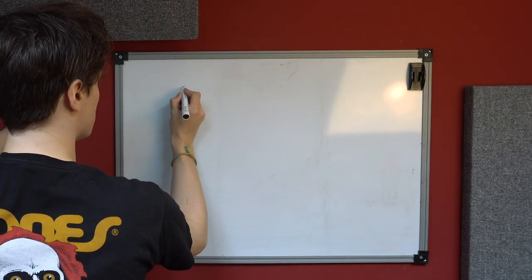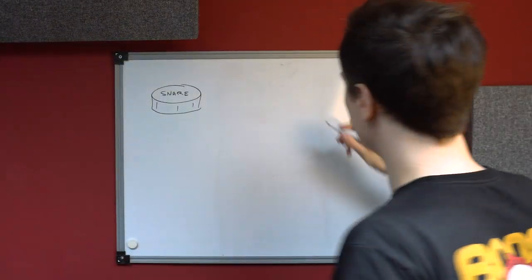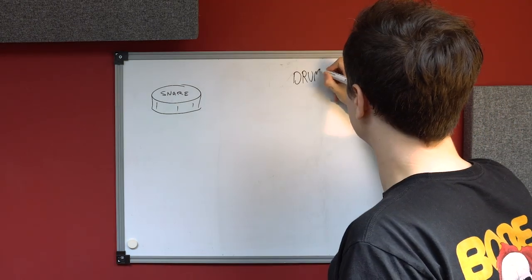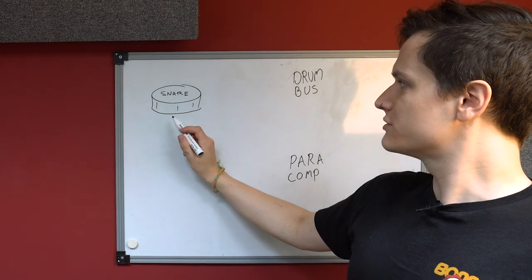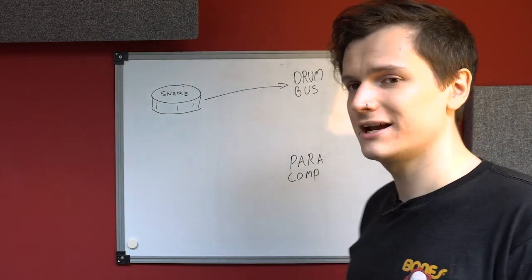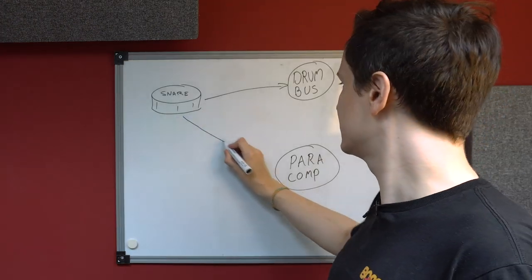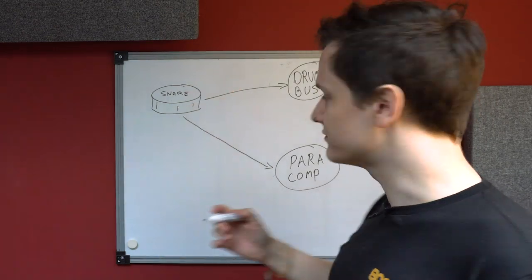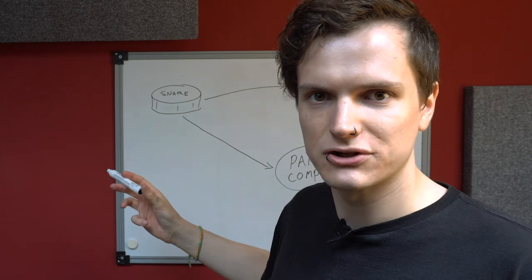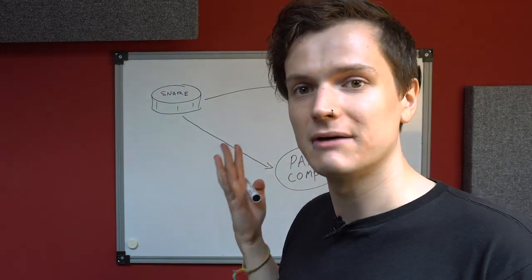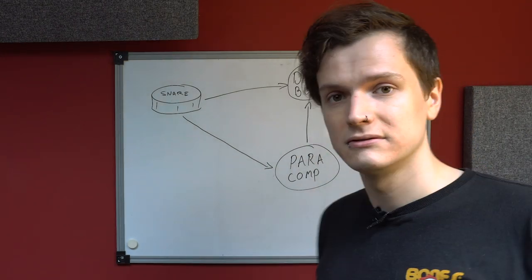So you've got a snare drum, and bus-wise you're going to have a drum bus and a parallel compression bus. Send the snare to your drum bus — that's a given — but also send the snare to the paracomp bus. Then send the paracomp to the drum bus. So now you've got the original snare, which is nice and transienty and punchy, going to the drum bus, but then the sustain comes up from the parallel compression, which also feeds into the drum bus for the final sound.